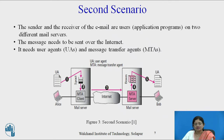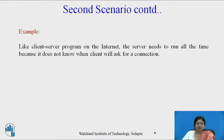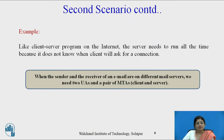There is a client-server communication between the MTA client and MTA server of Alice and Bob, and for that they use the internet. In the second scenario, a client-server program is used on the internet. The server needs to run all the time because it does not know when the client will request a connection. In a nutshell, when the sender and the receiver are on different mail servers, we need two user agents and a pair of MTAs, that is, a client-server program.